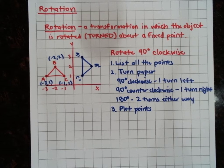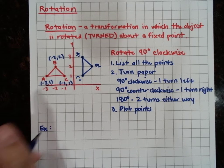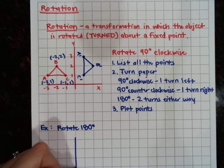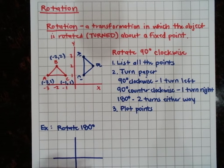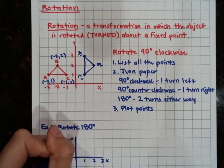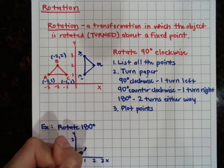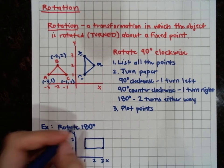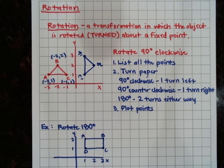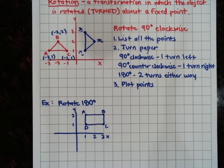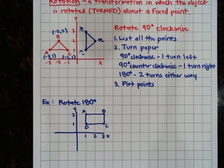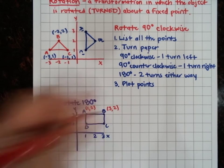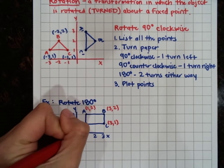Let's do one more example. They want us to rotate this rectangle 180 degrees. We have points: A is one two, B is three two, C is three one, and D is one one. Now we need to go through our steps for a rotation. First, list all the points: A is one two, B is three two, C is three one, and D is one one.